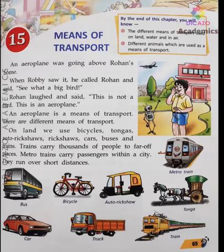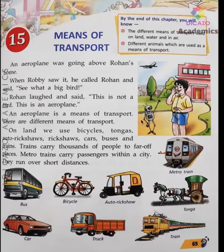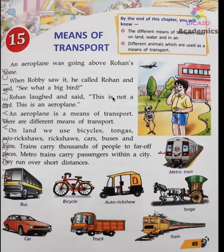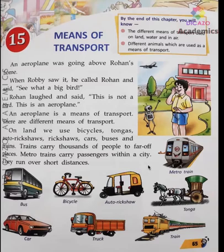One day an aeroplane was going above Rohan's home. Robbie saw it and called Rohan, saying 'See what a big bird!' Rohan laughed and said, 'This is not a bird, this is an aeroplane.' An aeroplane is a means of transport. Transport means something used to take people or things from one place to another.